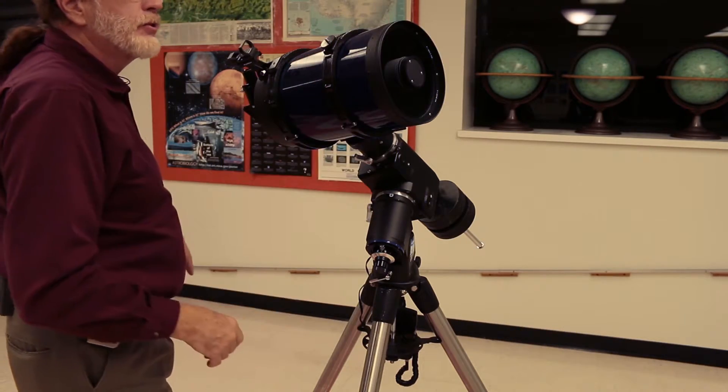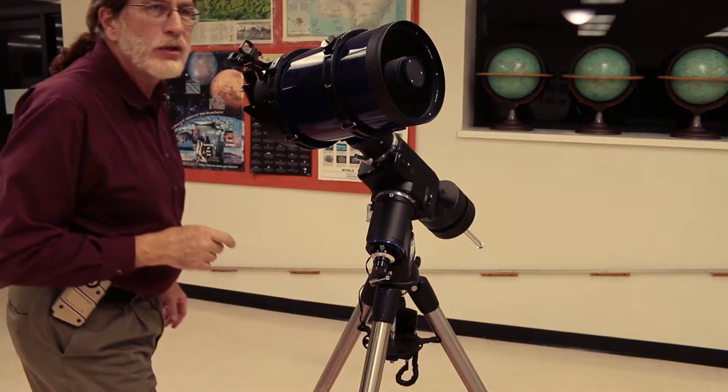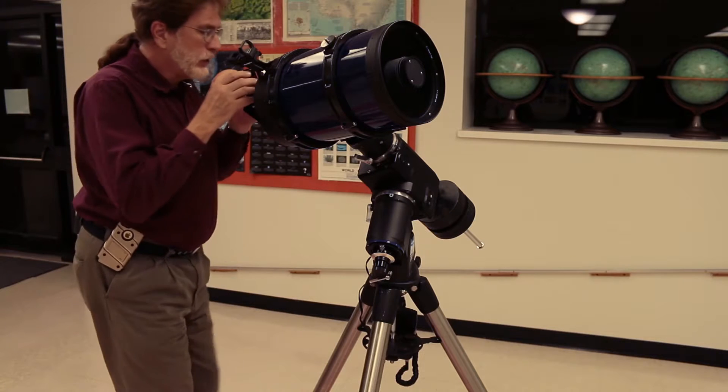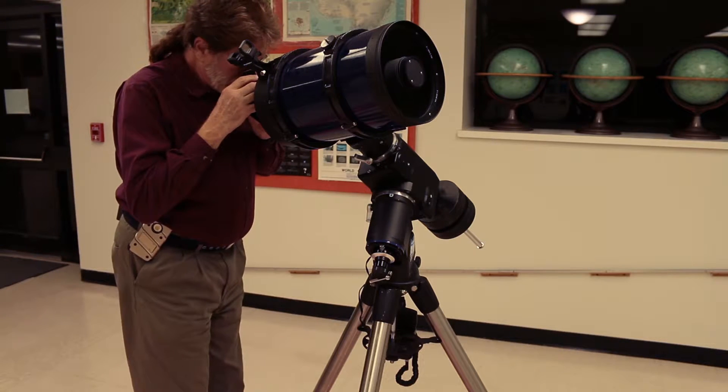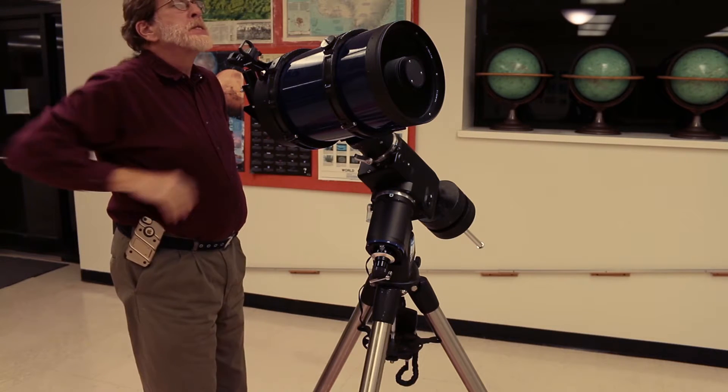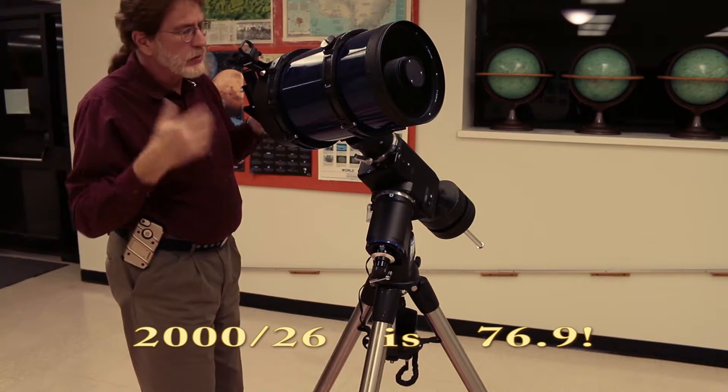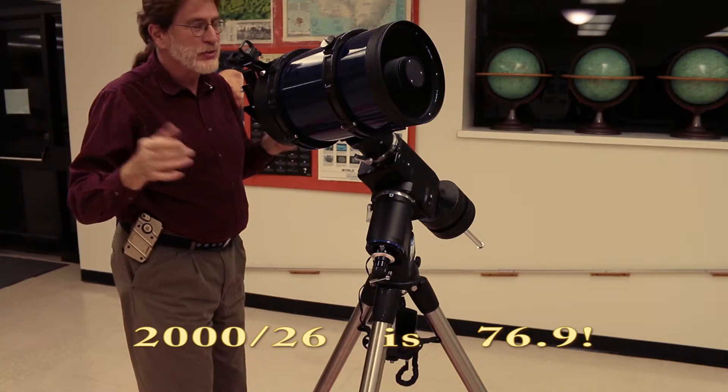Which basically gives you a telescope that has a focal length, as it says up in front here, of 2,000 millimeters. So when I look at the moon, how much bigger do things look in here than the naked eye? 2,000 divided by 26. What is that, about 80 times magnification? Something like that. You do the math, please do the math.